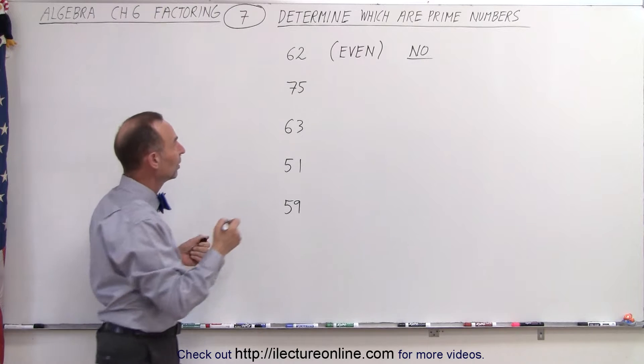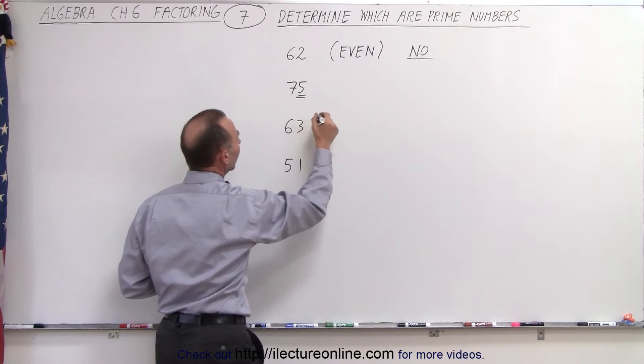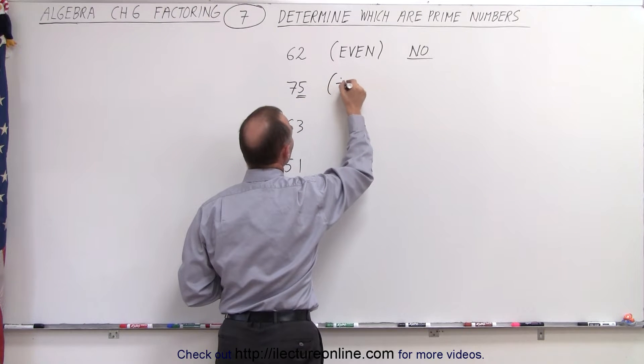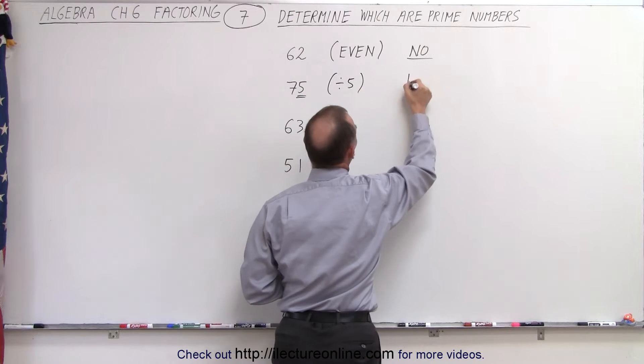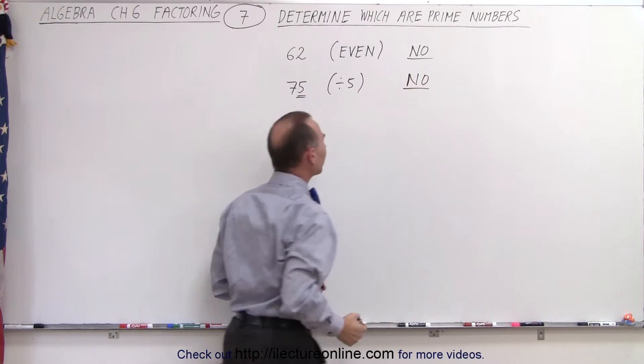How about the next one, 75? Well, notice it ends in a 5, which means we can divide it by 5, therefore no, it's not a prime number.